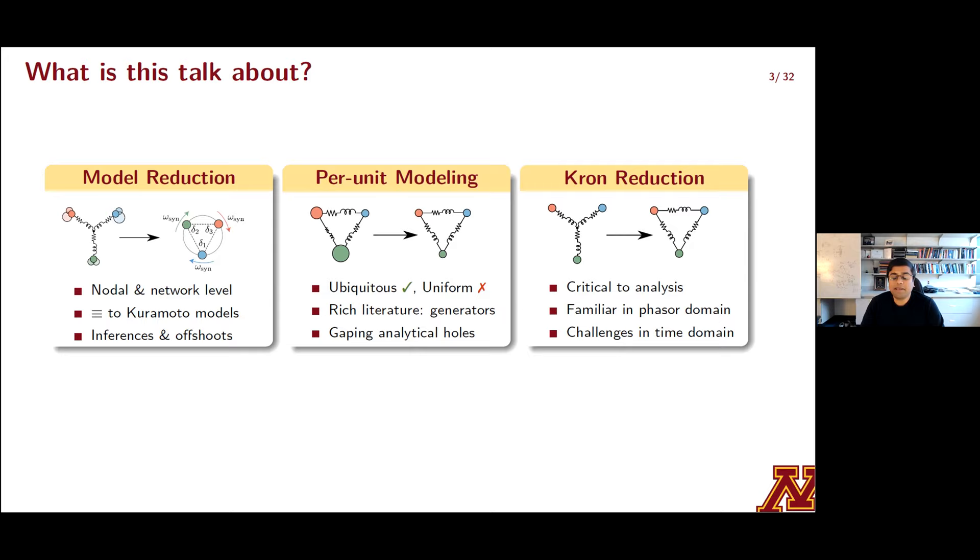While undertaking this modeling effort we encountered some key challenges and we bumped into a few open questions for two tasks that were pervasive in our effort. These two topics are per unit modeling and Krone reduction. We'll focus on these in the second and third portions of the talk but just a quick snapshot of what's lying ahead. Per unit modeling is as ubiquitous as it's not uniform. In my mind that's a dangerous combination. There's a rich literature on per unit models for synchronous generators but frankly several gaping holes when it comes to applying similar ideas for normalizing dynamics of power converters.